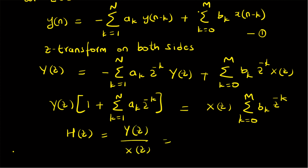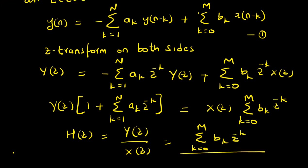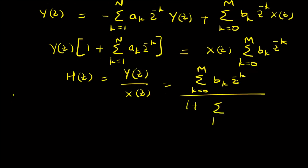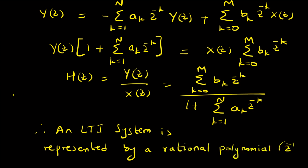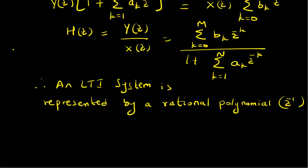From system theory, recall that the system function H(z) is the ratio of the Z-transforms of the output to the input. So H(z) = Y(z)/X(z), which equals [summation k=0 to M of b_k · z^(-k)] divided by [1 + summation k=1 to N of a_k · z^(-k)]. Therefore H(z) is a rational polynomial, and an LTI system is represented by a rational polynomial in terms of z^(-1).